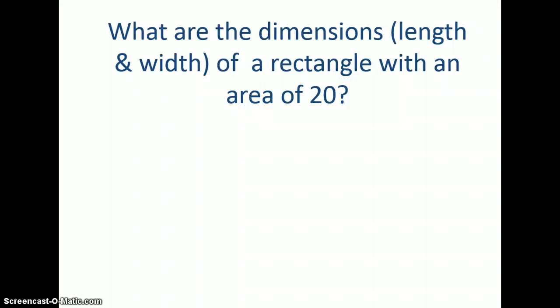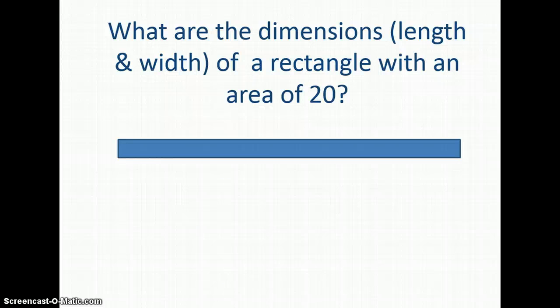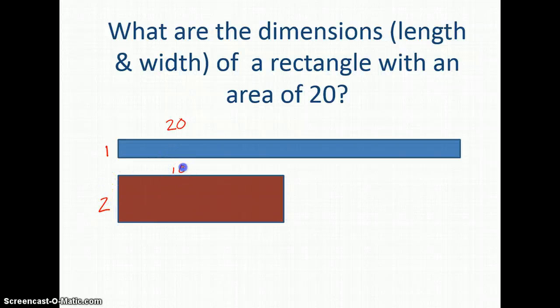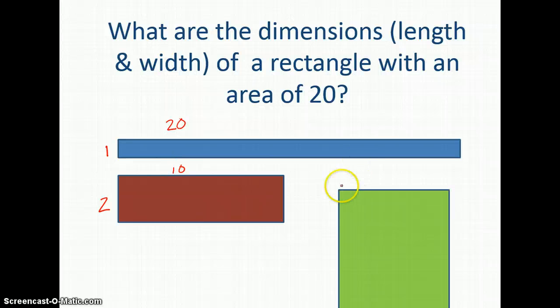In the video, the Cyberchase kids used rectangles to find the factors of twenty, because when making a rectangle, the factors are the length and the width. Possible rectangles with an area of twenty include: a one by twenty (one times twenty), a two by ten (two times ten), and a four by five (four times five equals twenty).